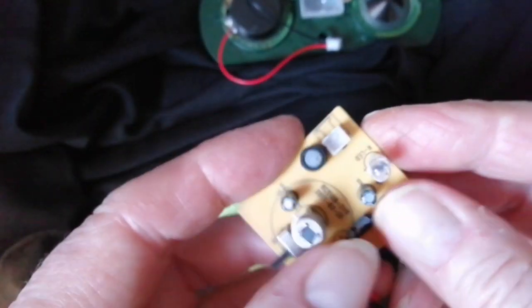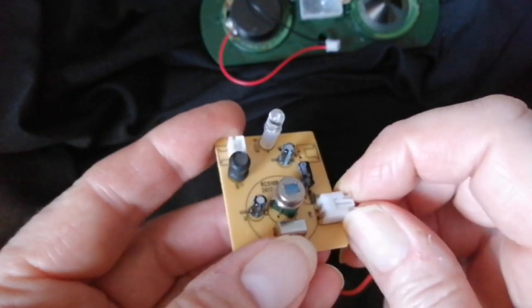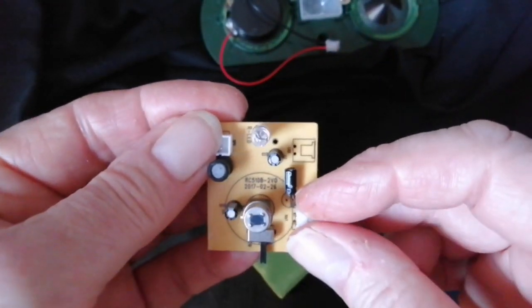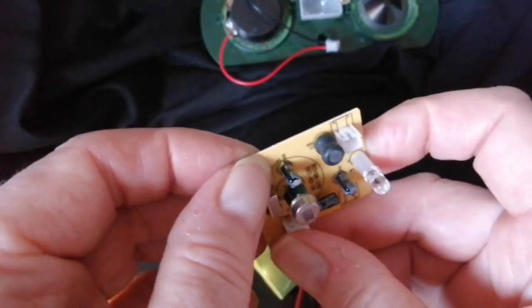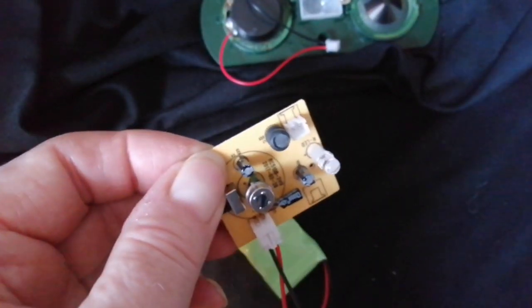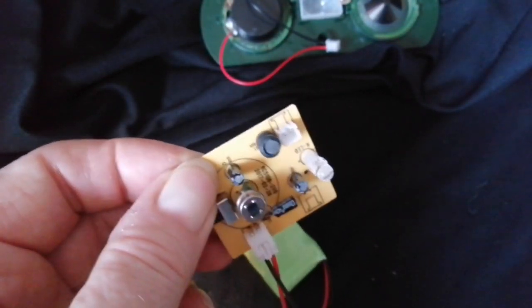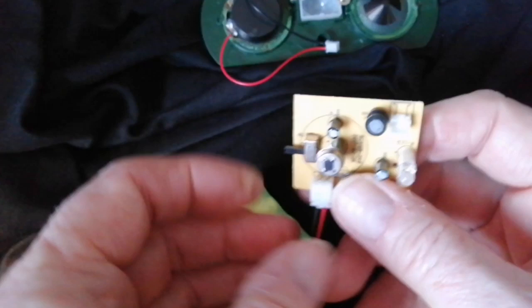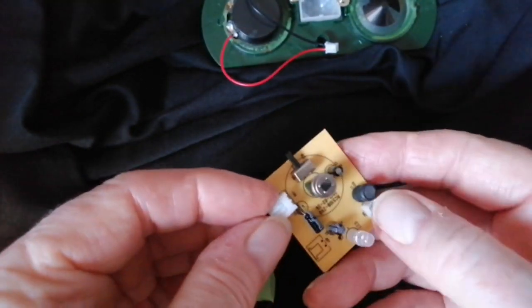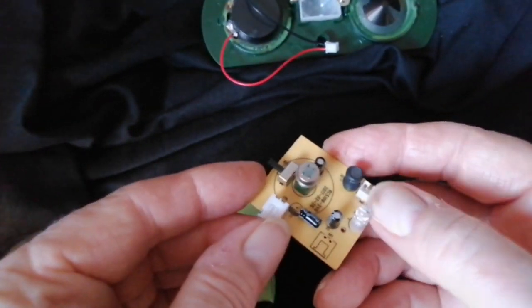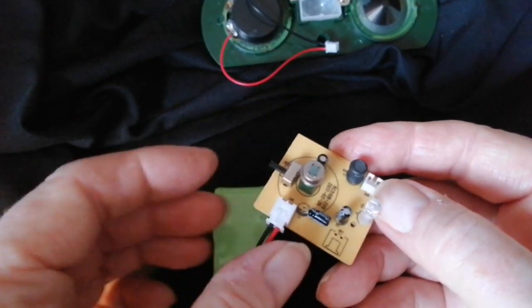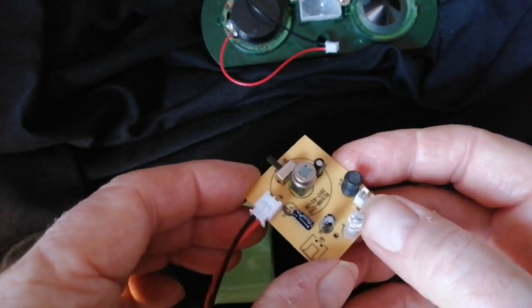They fitted sockets for the battery and the transducer. So why not fit the third one? If it's for cheapness, why not just omit them all? Why bother putting two things on sockets and not the third? It just seems mad.